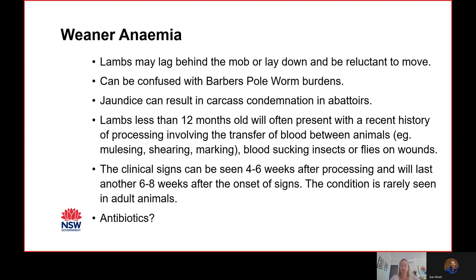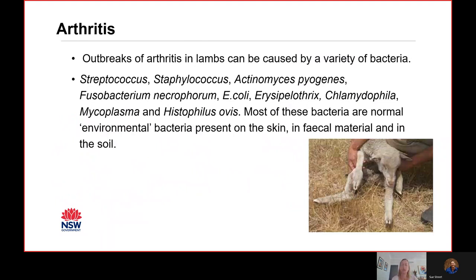The second weaner disease I'd like to talk about is arthritis. Lambs can get arthritis in one joint — one big, hot, puffy joint — or in lots of joints, which is called polyarthritis. Sometimes it doesn't present as swollen joints; they just look tucked up, usually because they're arthritic in hip joints or spinal vertebrae. It can be caused by a variety of bacteria: streps, staphs, erysipelas, chlamydia, mycoplasma — there are lots of different bugs. Most are normal environmental bacteria present on the skin, in faeces, and in the dirt. It's not about preventing the bacteria as such — it's about ensuring your weaner has a great immune system to fight them off.